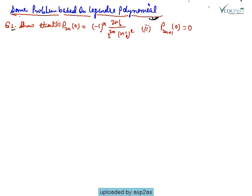Our question is: show that first, P_n(0) is equal to (-1)^n times (2n)! divided by 2^(2n) times (n!)^2, and second, P_{2n+1}(0) is equal to 0.